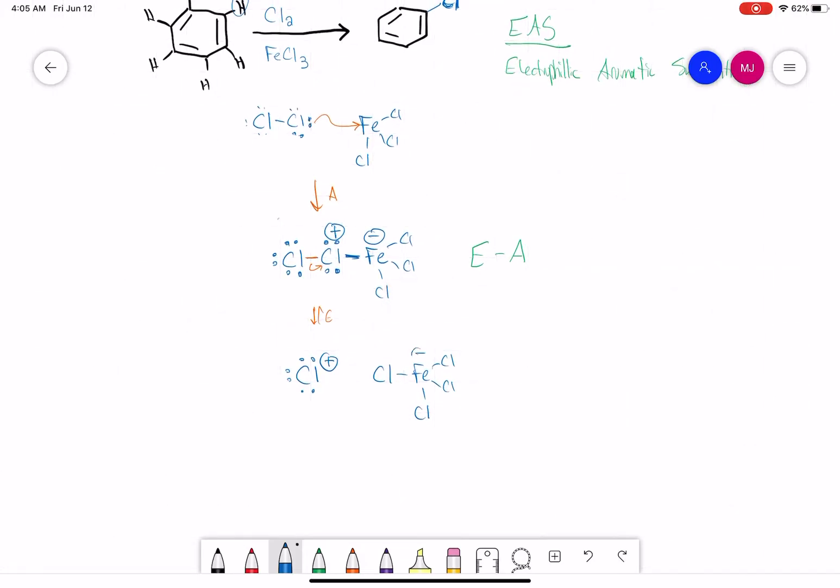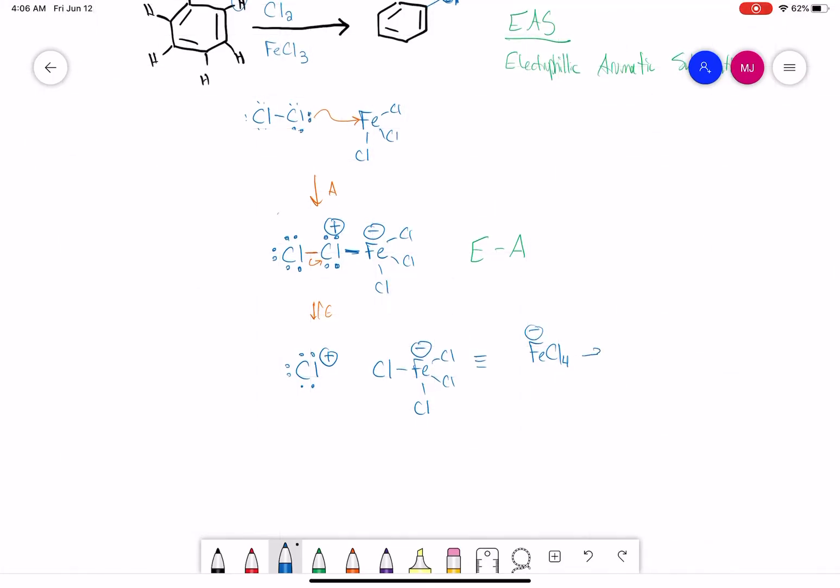And then a ClFeCl3 with the iron having a minus. So basically what we've drawn here is FeCl4 minus. And I just want you to know that is really an equilibrium with an FeCl3 and a Cl minus.